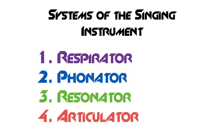Every instrument has some aspect of each of these. If you're playing guitar, your finger or your pick is going to be number one — that's going to get the vibration happening. Number two is the thing that's vibrating, so that would be the guitar string. And number three, the resonator, is the body of the guitar.